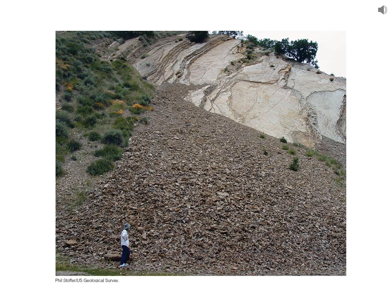Here's an example of a talus slope — we talked about talus slopes when we discussed weathering. We can see all that unconsolidated material holding a pretty steep slope. This stuff has probably weathered off this cliff face up here, and these are pretty angular jagged particles, so they can hold a pretty steep slope.